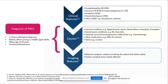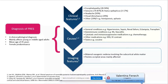PRES has multiple causative factors and can be associated with various conditions. The most common causes include hypertension, sepsis, renal failure, eclampsia, and transplant patients, as well as autoimmune conditions such as rheumatoid arthritis and vasculitis, and cytotoxic and immunosuppressive medications such as chemotherapy.